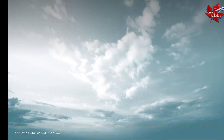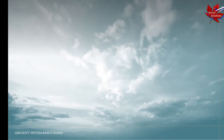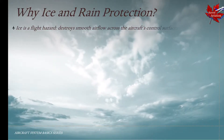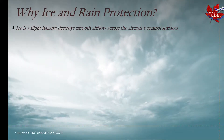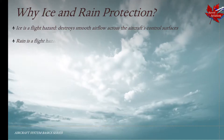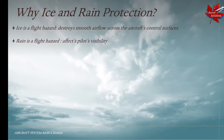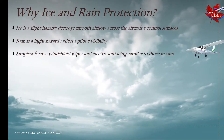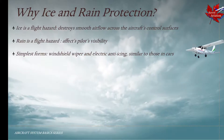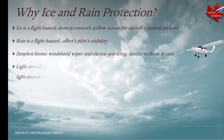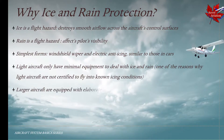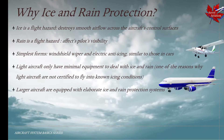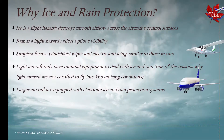Welcome to our latest module on Ice and Rain Protection. Ice is a flight hazard because it destroys smooth airflow across the aircraft's control surfaces. Rain is a flight hazard as it affects the pilot's visibility during take-off and landing. The simplest forms of ice and rain protection would be windshield wipers and electric anti-icing, similar to those found in cars. Light aircraft only have minimal equipment to deal with ice and rain, which is one of the reasons why they are not certified to fly into known icing conditions.